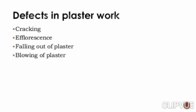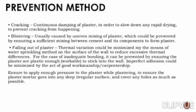The defects in plaster work include: cracking, efflorescence, falling out of plaster, and blowing of plaster. Prevention method for cracking involves continuous damping of plaster in order to slow down any rapid drying and prevent cracking from happening. For blistering, it is usually caused by uneven mixing of plaster, which could be prevented by ensuring sufficient mixing between cement and its components to form plaster.